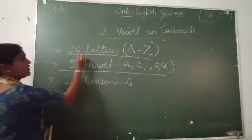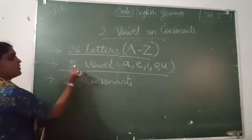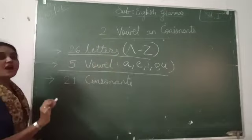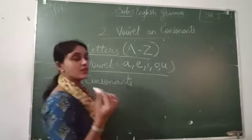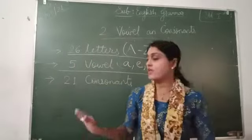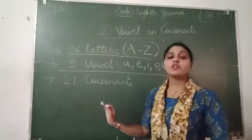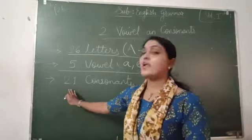In English alphabet, there are 26 letters, 5 vowels and the remaining are consonants. The remaining letters are consonants.